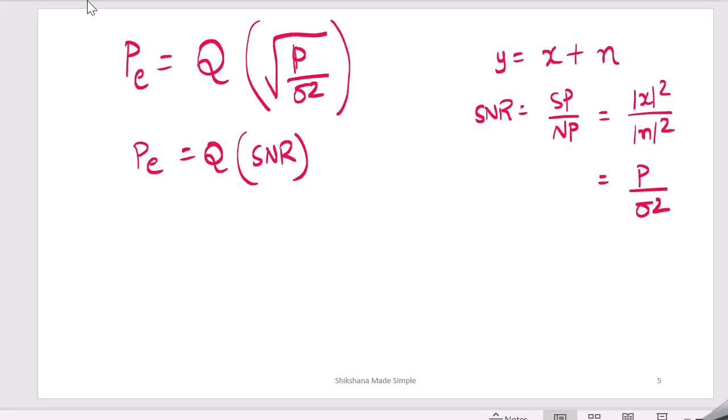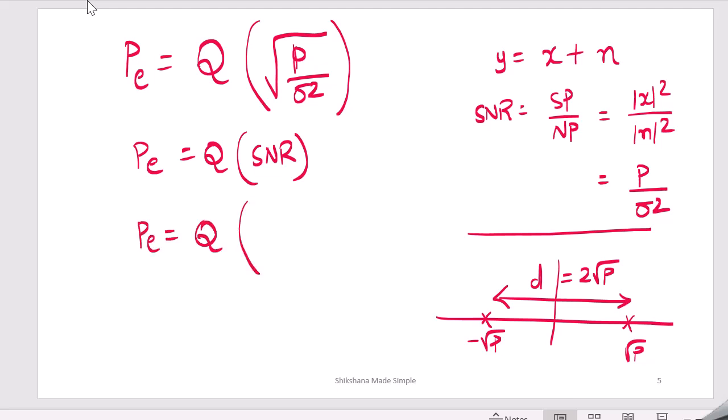Also we can write it in one more way. So we had this constellation minus square root of P and we had square root of P. What is the distance between these two? Two square root of P, so d is equal to 2 square root of P. Probability of error is equal to, you can write it as Q of d by 2 sigma. So this d is nothing but the distance between two symbols.